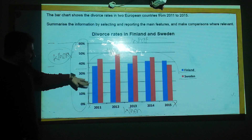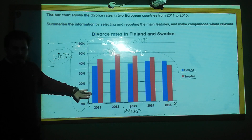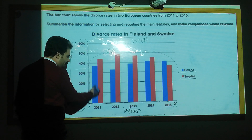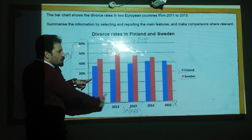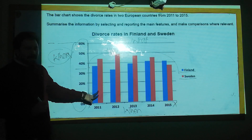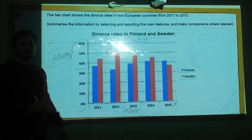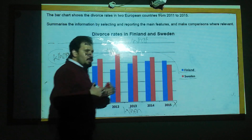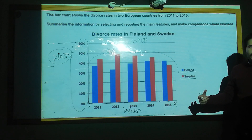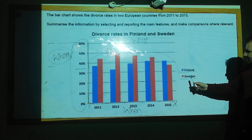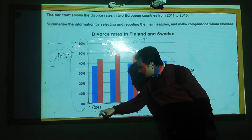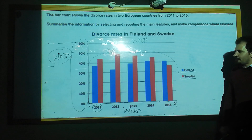We can take a start from the beginning. This is the first portion. The blue line shows Finland's length, and the red line shows Sweden. We want to write the first overview paragraph. In 2011, we can see the time: the divorce rate starts with zero and reaches to nearly almost about 38%.